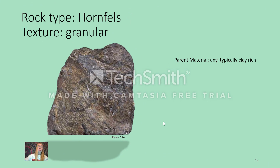Lastly, we look at hornfels. Hornfels is non-foliated. It's a metamorphic rock produced by the recrystallization of clay-rich rock adjacent to a cooling igneous body, and this process is called contact metamorphism. It has a granular texture, is very fine-grained, and tends to be very strong. It can form out of any parent material that is next to an igneous rock as it cools, but it most often forms out of a parent material very rich in clay. This concludes the video on metamorphic texture and the classification of metamorphic rocks.